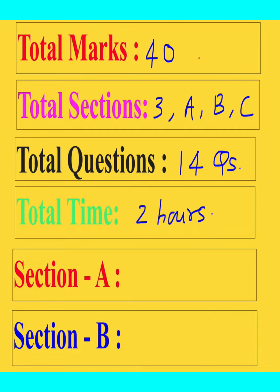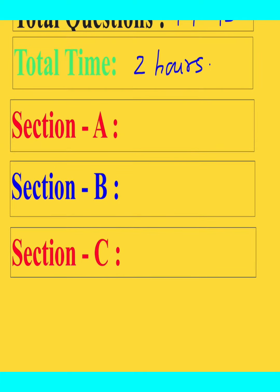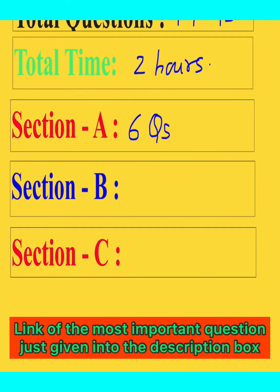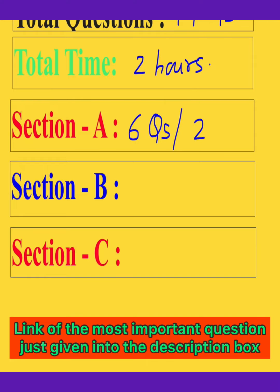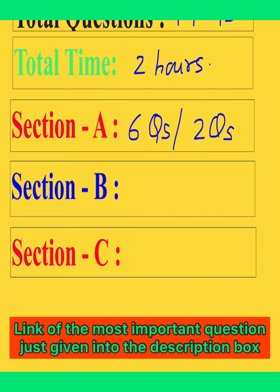In Section A, you will get a total of six questions, and there will also be two internal choices in this section. So you will get a total of eight questions in Section A but you will attempt only six. These internal choice questions will be like 'question 5 or this option,' and similarly for others.